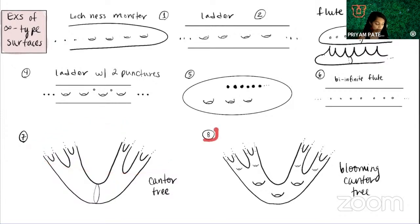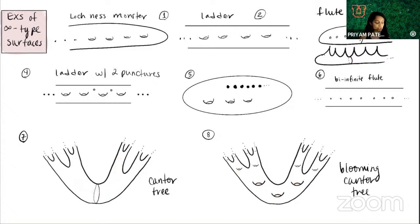Example eight is the blooming or blossoming Cantor tree. The skeleton of the tree is the same, but wherever I saw an edge, I stamp in a genus. These two feel distinct: if you're living on the surface and walking out, in both you have a Cantor set's worth of ways, but in one of them you're going to see genus every so often as you trek out forever. That's the distinguishing property.